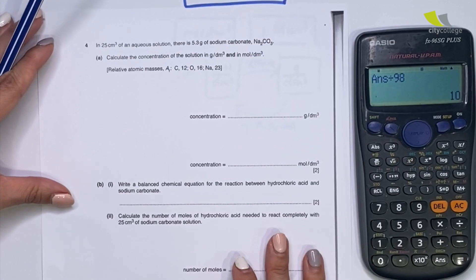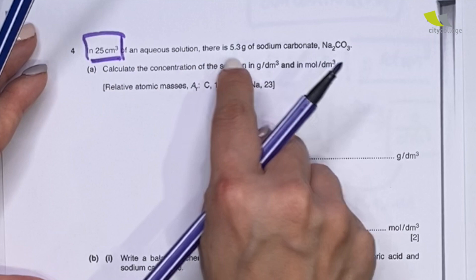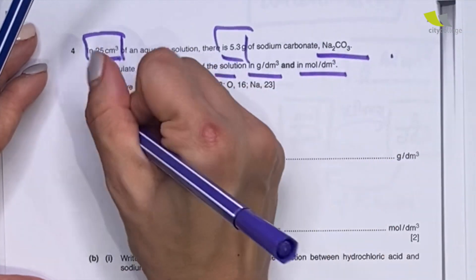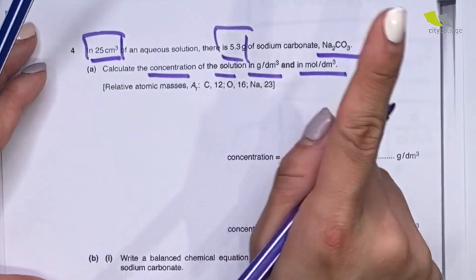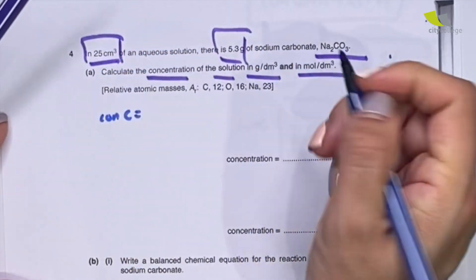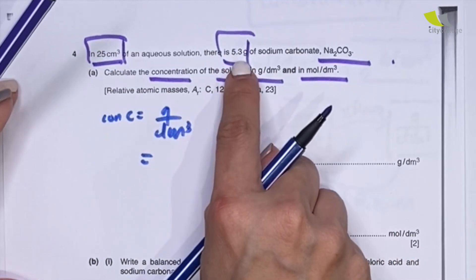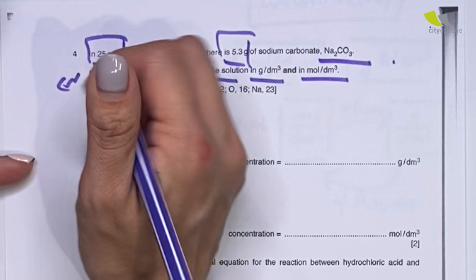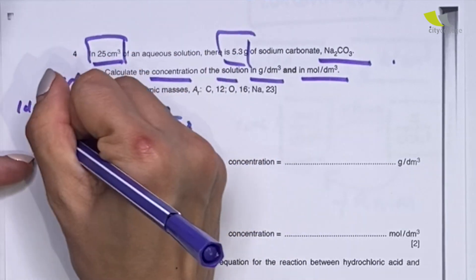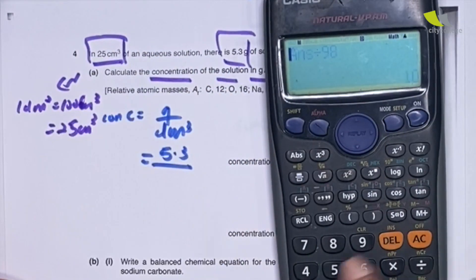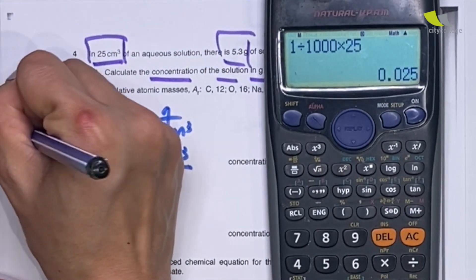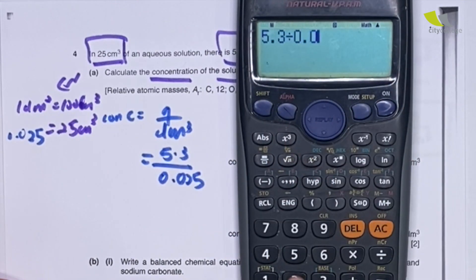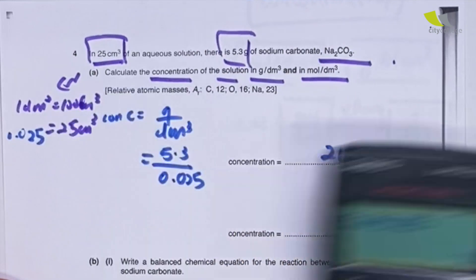Next is a similar question. A 25 cm³ of aqueous solution contains 5.3 grams of sodium carbonate. Calculate the concentration in gram per dm³ and mole per dm³. Direct application — the units give you the formula. Concentration equals gram over dm³. Mass given is 5.3. For 25 cm³: 1 dm³ equals 1000 cm³, so using ratio and proportion, divide by 0.025. The calculator gives 5.3 divided by 0.025 = 212 gram per dm³.